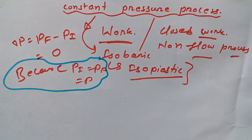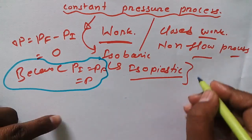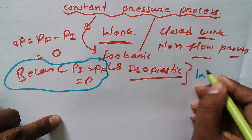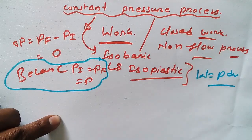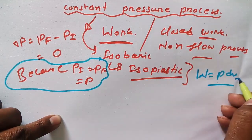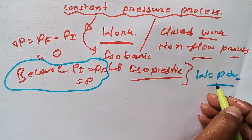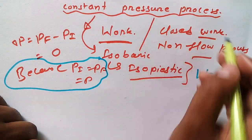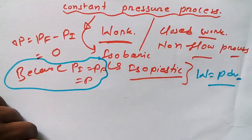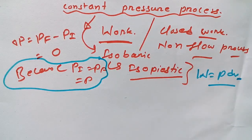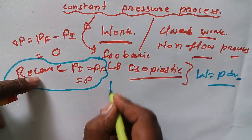Now let me share how to find out the work done. The standard formula for finding work done in the case of a constant pressure process is W equals ∫PdV, but this formula is only applicable for a closed or non-flow process.